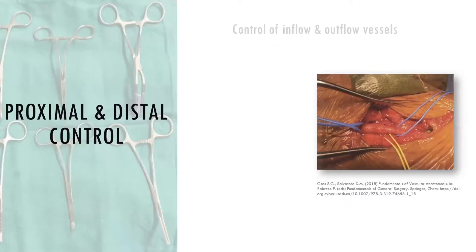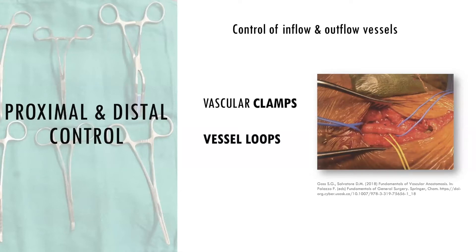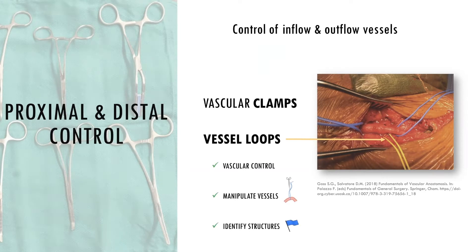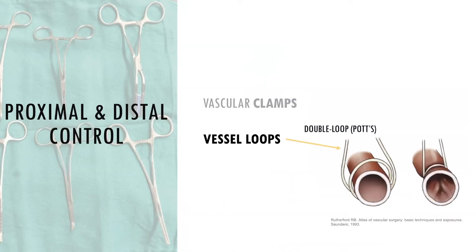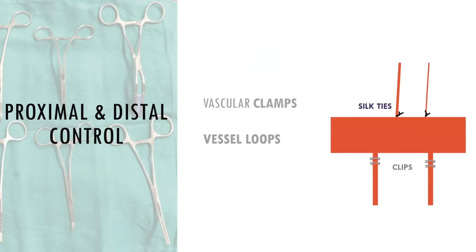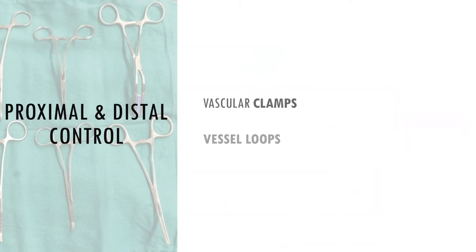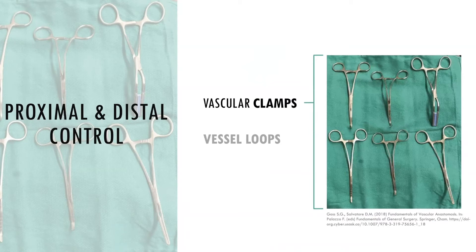Proximal and distal vascular control means the major inflow and outflow vessels should be controlled with clamps or vessel loops before the artery is opened to minimize blood loss. Vessel loops are soft silicone strings used for vascular control and to manipulate vessels for clamp placement. Loops are placed proximal and distal to the site of the future anastomosis. Loops using a double loop called a POTTS loop control small to medium-sized arteries. Angled and curved vascular clamps are preferred for larger vessels. The surgeon identifies a soft segment of the artery for clamping since heavily calcified arteries may not occlude completely, and clamping may disrupt the plaque and damage the vessel wall.